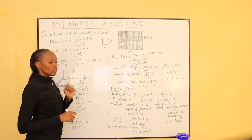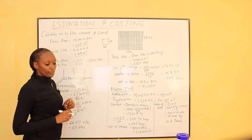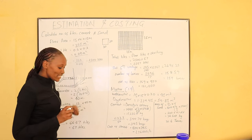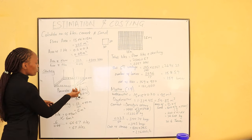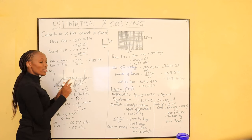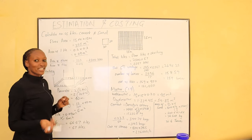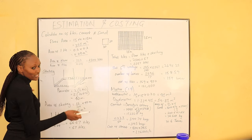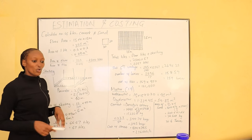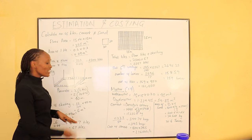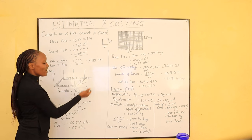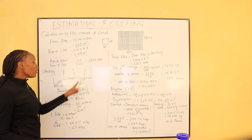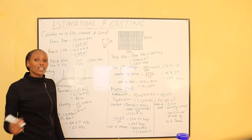The number of tiles required for the floor is 225 ÷ 0.09 = 2,500 tiles. But remember, in a house we also require skirting — tiles placed to some height from the floor to protect the walls from getting dirty. We normally raise the skirting tiles by 15 centimeters. If you look at a tiled room, you'll see tiles going up the wall to a certain height.